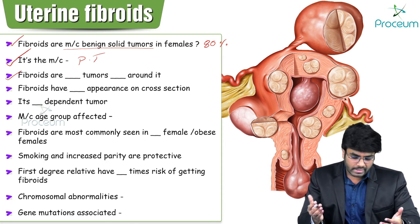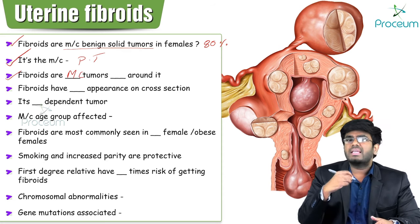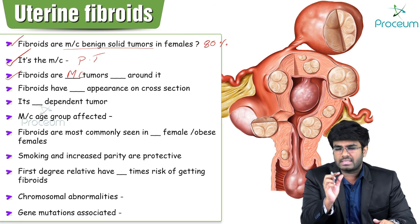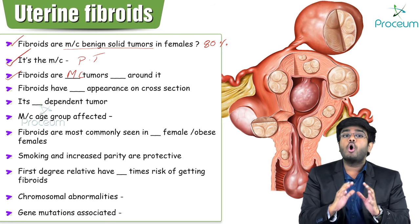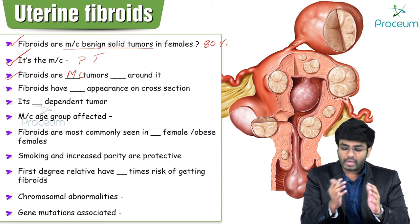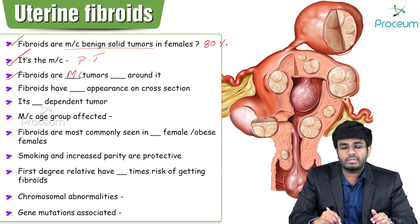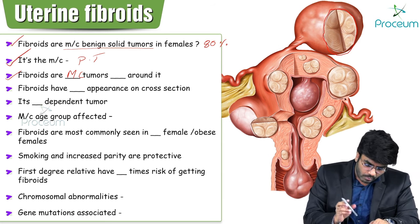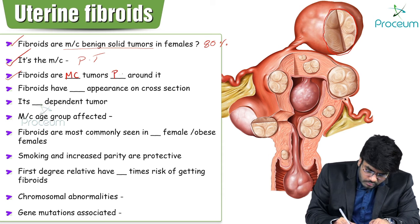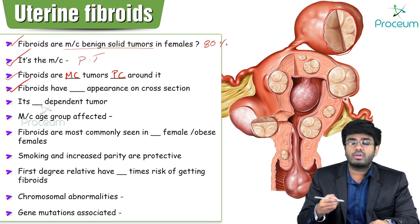Fibroids are monoclonal tumors. Monoclonal means one myometrial cell undergoes rapid division and the whole tumor forms from that single cell. These fibroids are surrounded by a pseudo capsule — not a true capsule. So fibroids are monoclonal tumors with a pseudo capsule present around them.